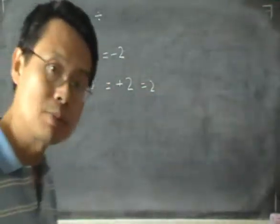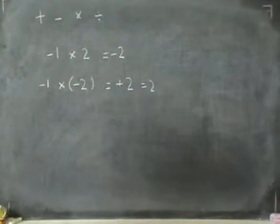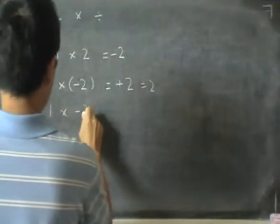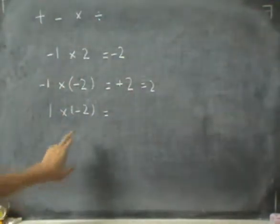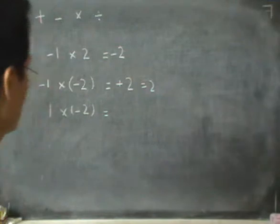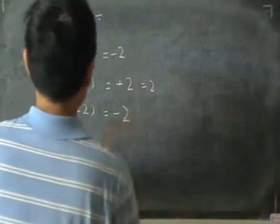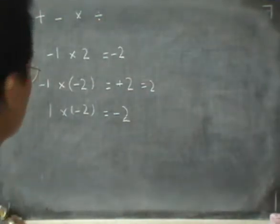So minus minus becomes plus. And we can also have 1 times minus 2. In this case, it's just one minus sign, so that's a minus 2. So this is how we deal with negative numbers.